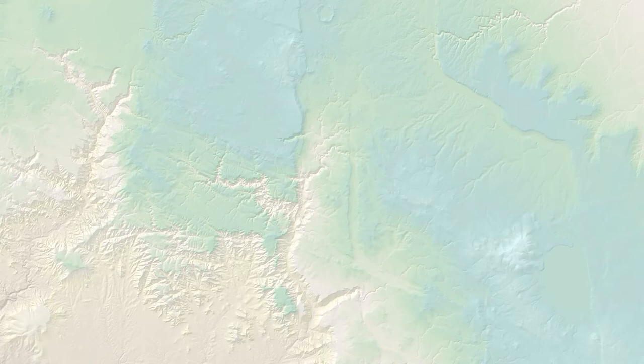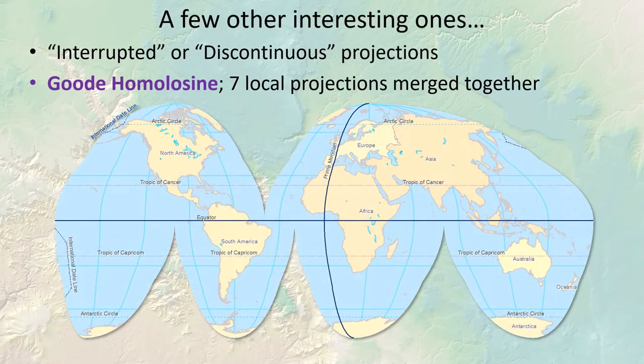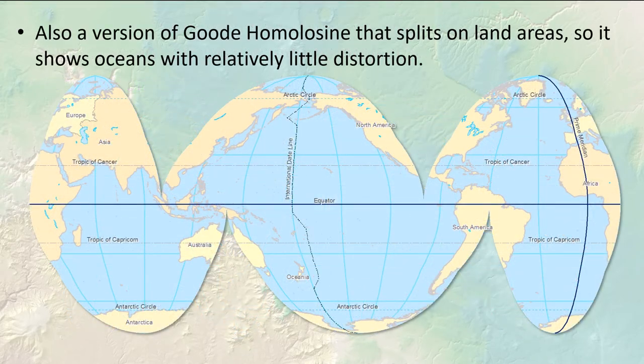Let's look at a few other interesting projections. They don't really fall into a single class like planar or conic or anything. This Goode's homolosine is actually formed by seven separate projections merged together. We refer to these multi-part projections as interrupted or discontinuous projections. This one is designed to show the shape of the land masses of the earth with relatively little distortion, so the earth is broken along the oceans. There's actually a version designed to show the shapes of the oceans correctly with as little distortion as possible.